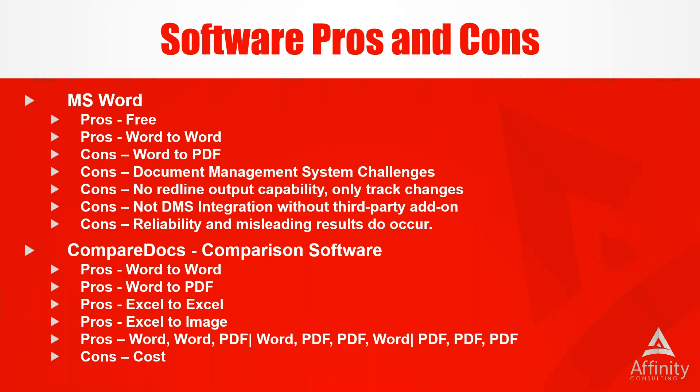The software we're going to be talking about today is Comparadox — one of the comparison software products on the market. The key pros of Comparadox: it will do different types of documents. If you need to compare Word to Word, obviously it does that. It will do Word to PDF, PDF to PDF, Excel to Excel, and even Excel against an image. It can also do multiple document comparisons — Word against a Word to a PDF, a Word to a PDF and a Word — the options are somewhat endless as far as the different things you can do.